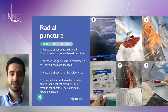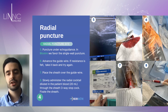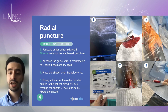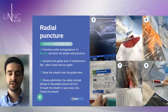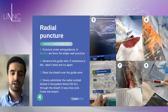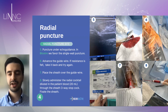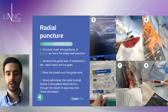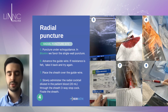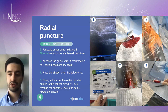After you have the sheath in place, you should infuse the radial cocktail. There are many mixtures and there is no secret formula for the radial cocktail. What is done at Bicêtre is normally a mixture of 5000 units of heparin to avoid thrombosis, and 2.5 milligrams of verapamil as a spasmolytic to avoid artery spasm and increase artery size.